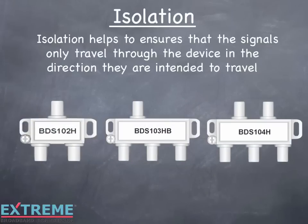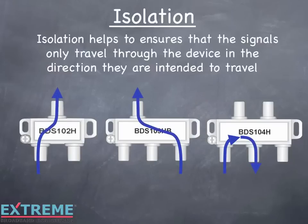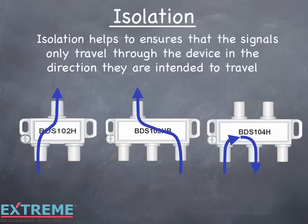Here we're showing a two-, three-, and four-way splitter with a return signal flowing from the output to the input. We don't want the signal to flow between the other output ports, but in reality a small amount travels through the other ports and is attenuated due to the port-to-port isolation.